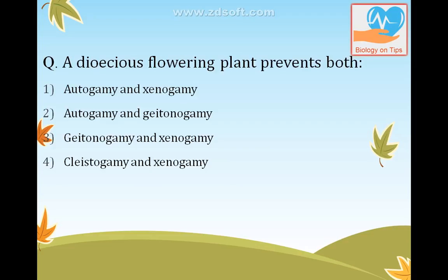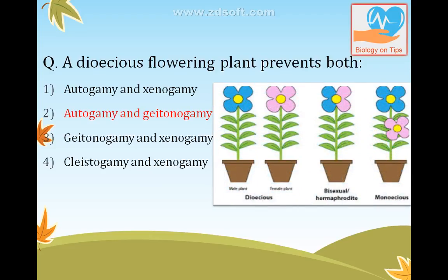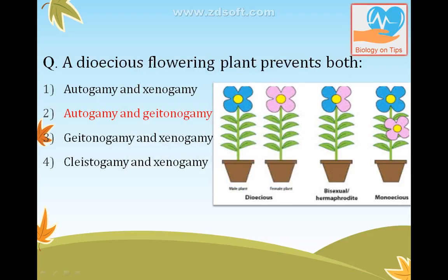A dioecious flowering plant prevents both autogamy and geitonogamy. In a dioecious plant, male and female flowers are present on two different plants. You can see in the diagram — this is the male plant with only male flowers, and this is the female plant with only female flowers. This condition is called the dioecious condition.